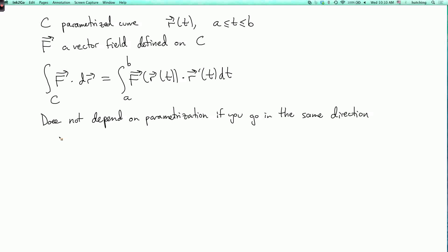Well, if you switch the direction, then you have the integral over minus c of f dot dr. So minus c means c going in the opposite direction. That's equal to minus the integral over c of f dot dr.